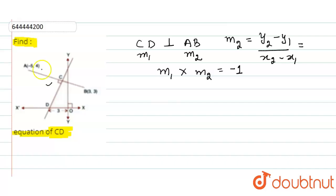We are given the coordinates of A: minus 5 comma 4, and the coordinates of B are 3 comma 3. So y2 minus y1 is minus 1 and x2 minus x1 is 8.